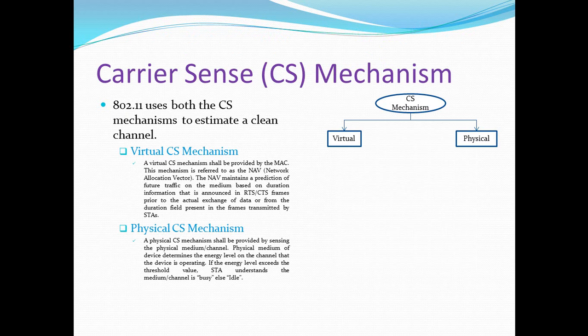Now, how does CSMA/CA work in the 802.11 mechanism? 802.11 uses two types of carrier sense mechanisms: one is the virtual CS mechanism and the other is the physical CS mechanism. The virtual CS mechanism shall be provided by the MAC. This mechanism is referred to as NAV, which stands for Network Allocation Vector. The NAV maintains a prediction of future traffic on the medium based on duration information announced in the RTS/CTS frames prior to the actual data exchange.